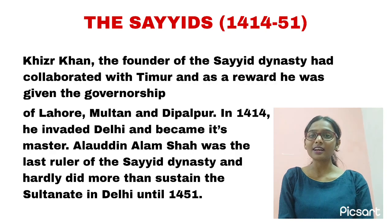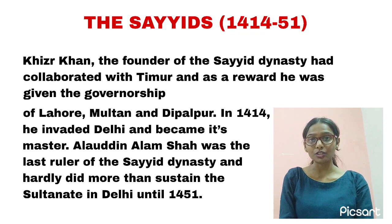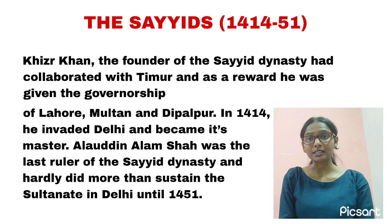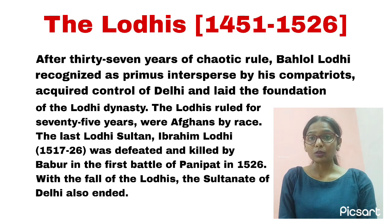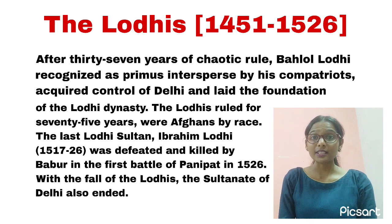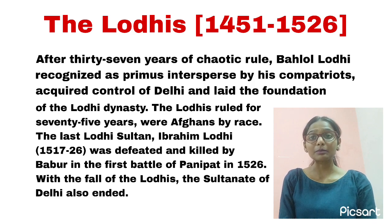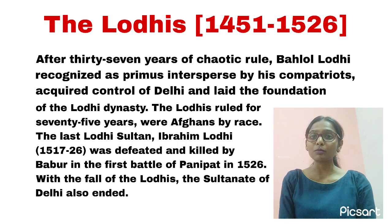In 1421, Khizr Khan died and the Sayyid dynasty was ruled by Mubarak Shah. After him, the dynasty did not last long, and Bahlul Lodi, an Afghan noble, established the Lodi dynasty in 1451 AD. After him, his son Sikandar Lodi ruled Delhi and shifted the capital from Delhi to Agra. He was succeeded by Ibrahim Lodi in 1517, but Ibrahim was unable to gain the support of Afghan nobles, who started fighting among themselves and began plotting against him for power.